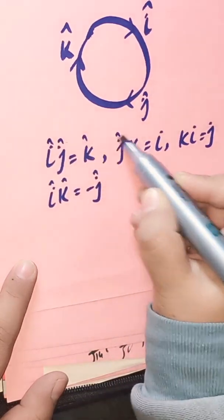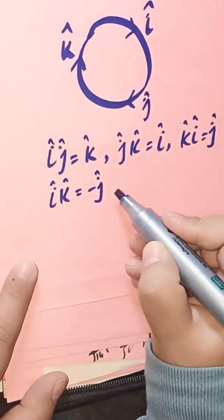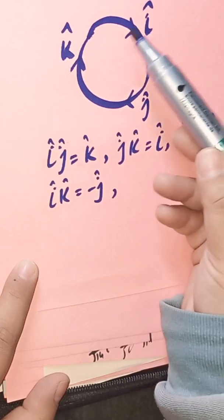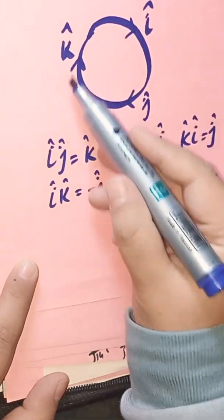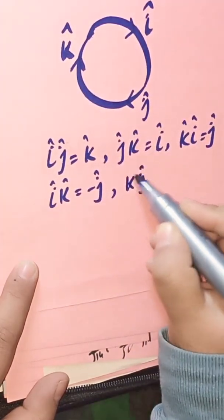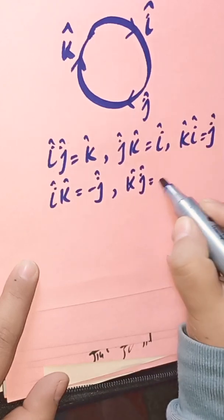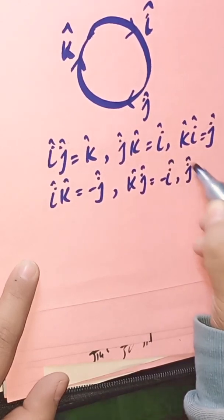But when we follow the direction opposite to these arrows, then the vectors would be same but the signs would be changed. i cross k vector equals to minus j, k cross j vector equals to minus i, and j cross i vector would be equals to minus k.